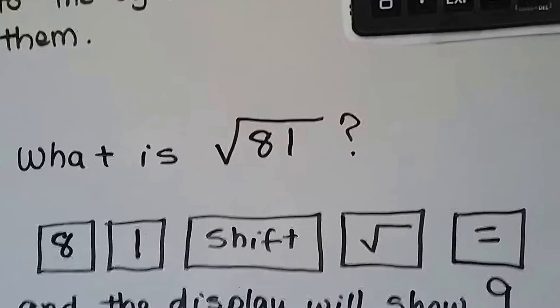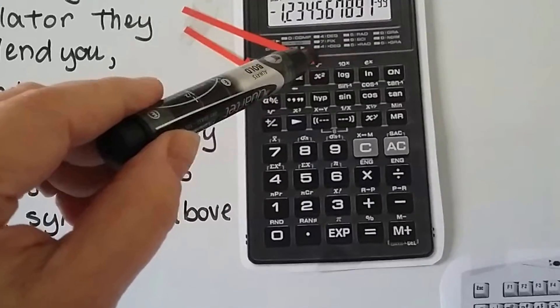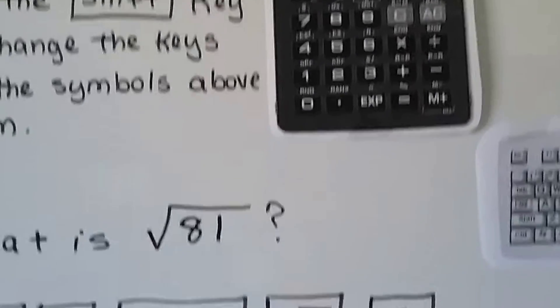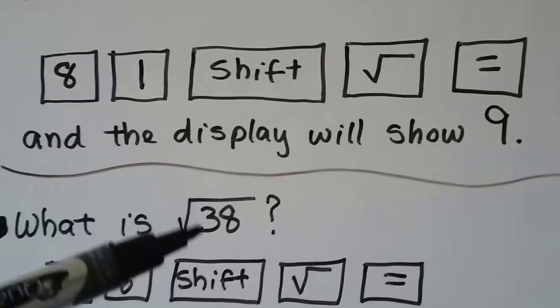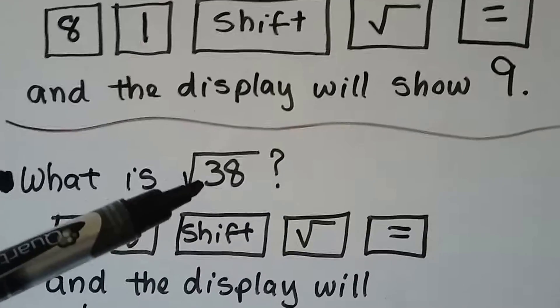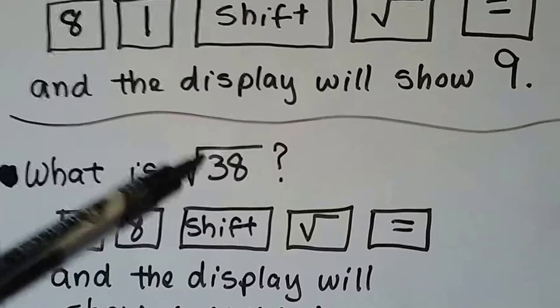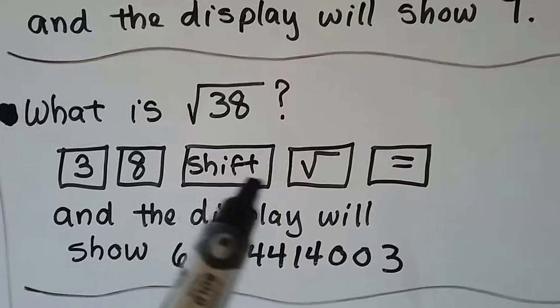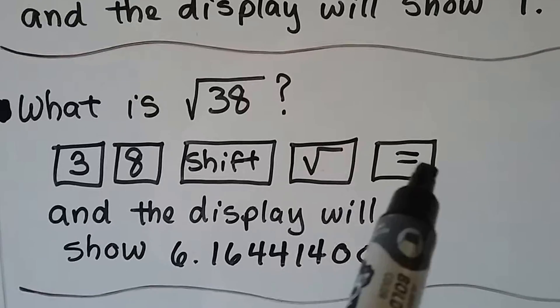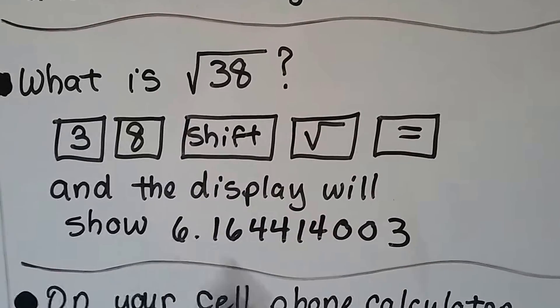So, what's the square root of 81? We put in 81, Shift, and we hit that key, which is actually the x squared key, but we hit Shift, so it's going to that radical sign. We hit Equal, and the display will show us 9. So, we can find square roots that are not perfect square roots, like 38. 36 is a perfect square root. Well, 38 isn't. That's going to be some weird decimal number. So, we put in 3, 8, we hit the Shift key, and then we hit that radical sign and Equals, and it's going to show us this nice decimal number as the square root.